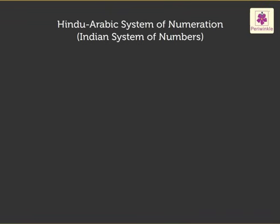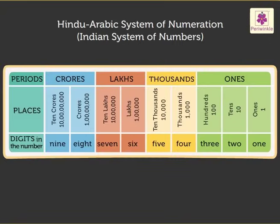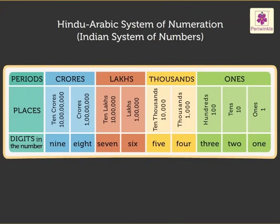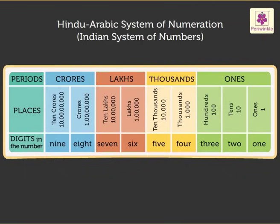Look at this table. It shows the periods, the places, and the digits. The six and seven digit numbers are placed in the ones period, the thousands period, and the lakhs period. The eight and nine digit numbers are also placed in the crores period. According to the Indian place value system, the ones period consists of the places ones, tens, and hundreds. The thousands period comprises of two places: thousands and ten thousands.